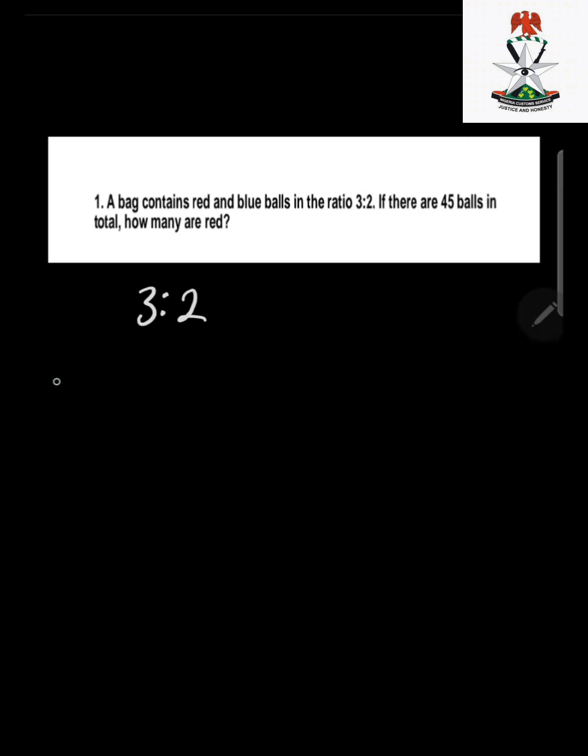The first thing we need to do is get our total ratio, which is going to be the sum of the given ratio. So 3 plus 2 is going to give us 5.